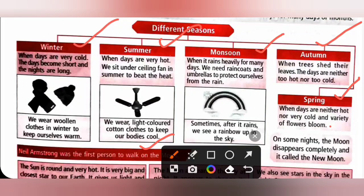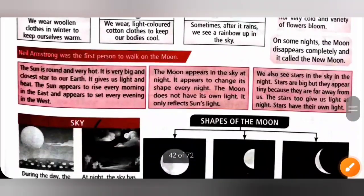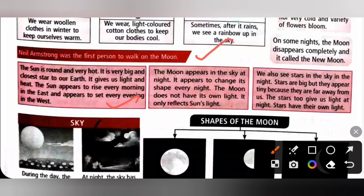On some nights, the moon disappears completely and it is called new moon. Neil Armstrong was the first person to walk on the moon. The sun is round and very hot. It is very big and the closest star to our earth. It gives us light and heat. The sun appears to rise every morning in the east and appears to set every evening in the west.